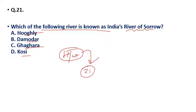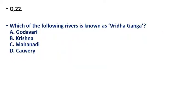Question 22: Which of the following rivers is known as Vriddha Ganga — (a) Godavari, (b) Krishna, (c) Mahanadi, (d) Kaveri? The correct answer is option A — Godavari is also known as Vriddha Ganga.